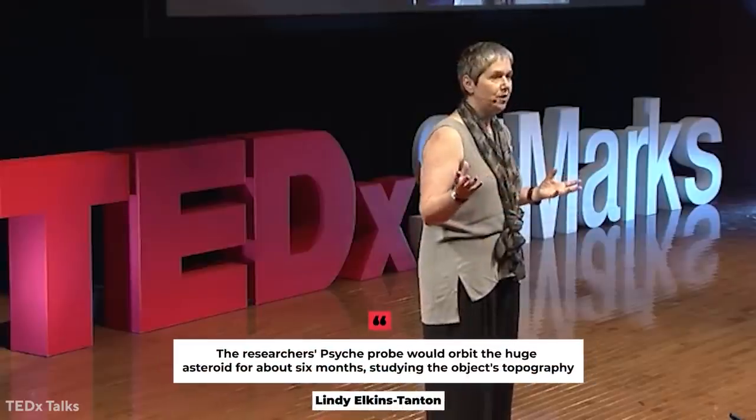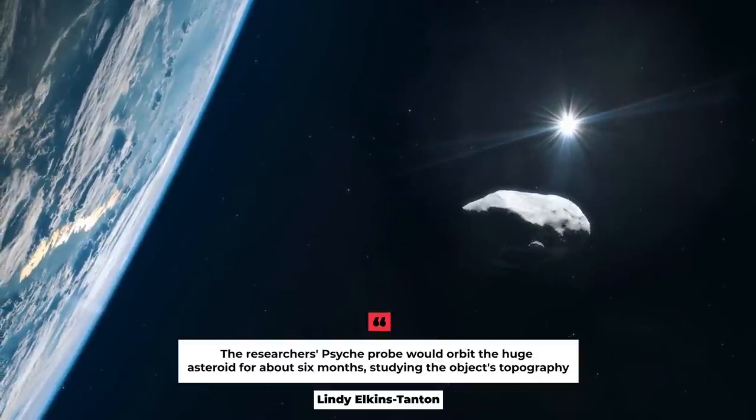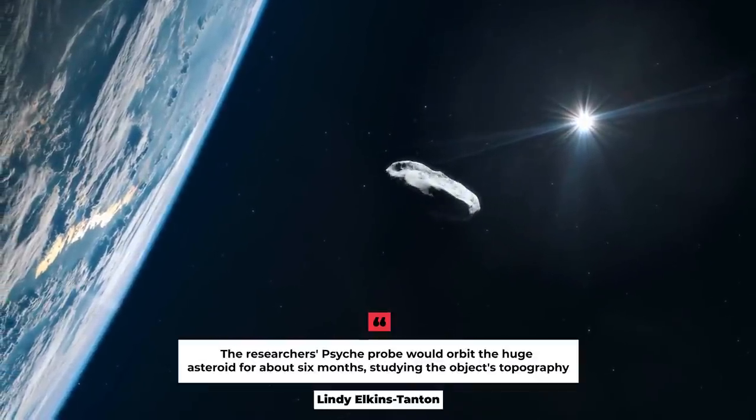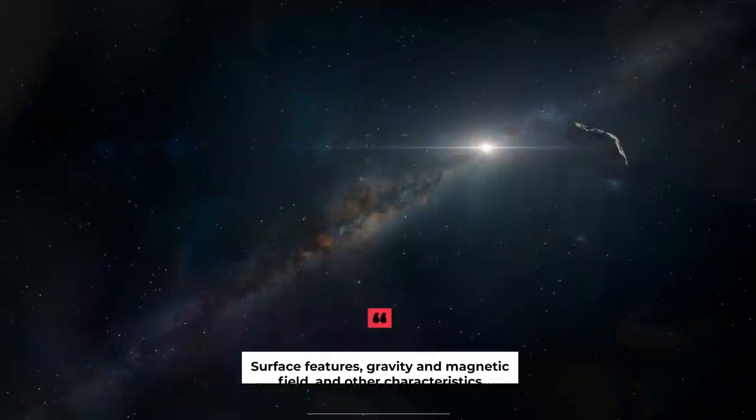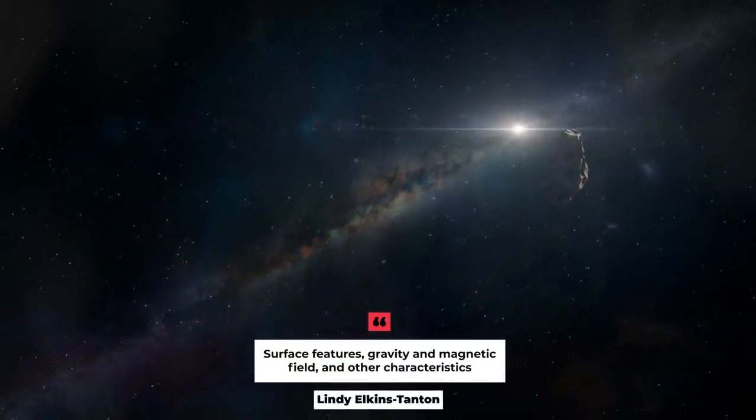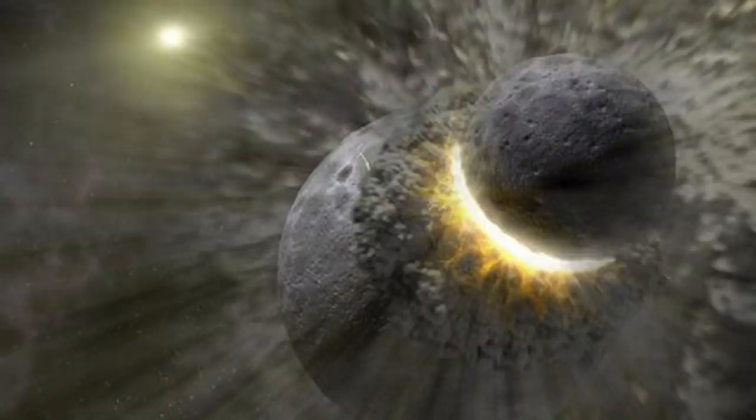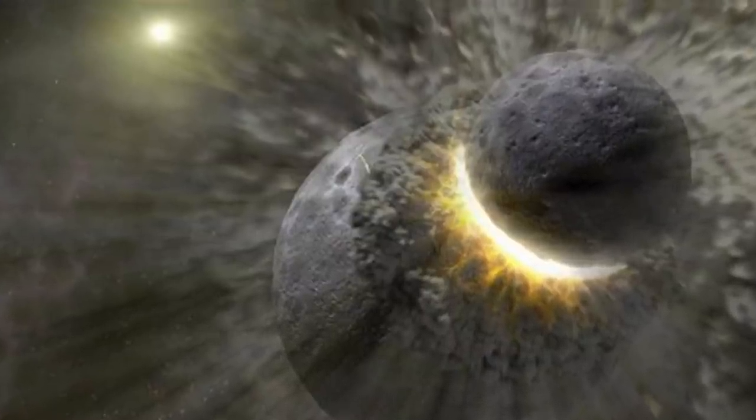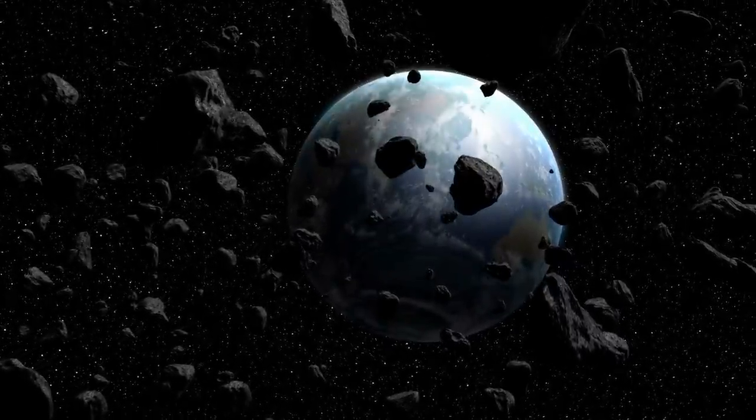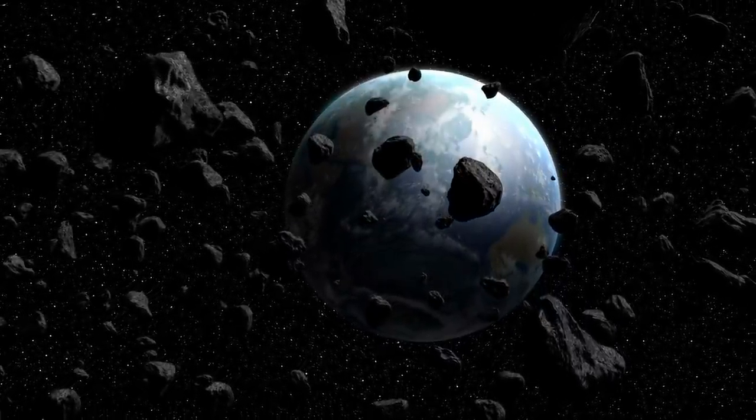Elkins-Tanton said that the researchers' Psyche probe would orbit the huge asteroid for about six months, studying the object's topography, surface features, gravity and magnetic field, and other characteristics. This simulation shows a hit-and-run collision between two large asteroids, the kind of impact that could have stripped the rocky layers from the big metal asteroid Psyche, exposing the protoplanet's iron core.